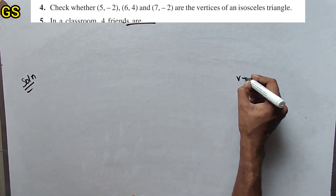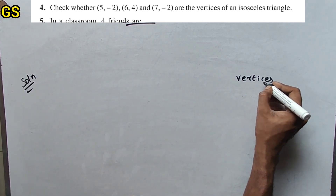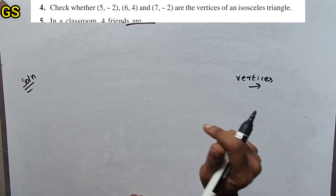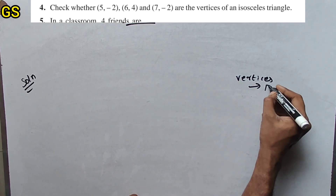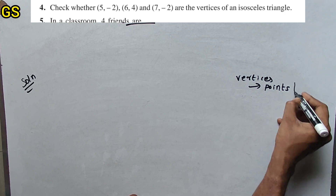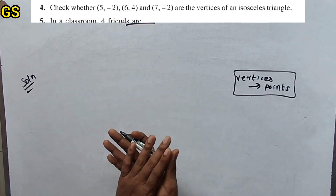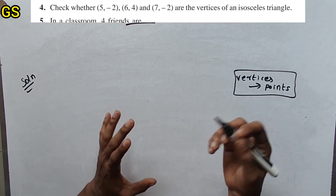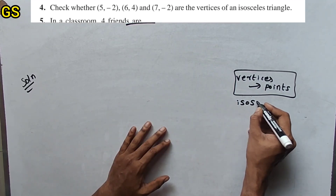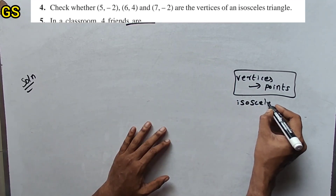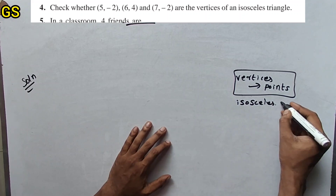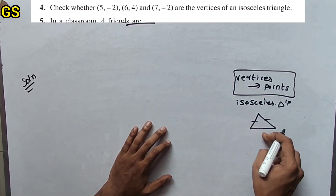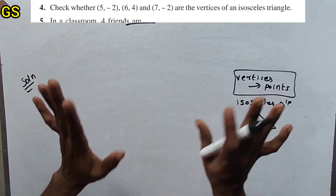We are going to check these points. Vertices of an isosceles triangle — isosceles triangle is where 2 sides are equal.